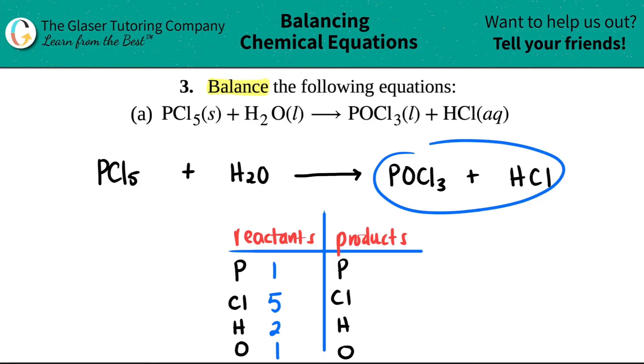I do the same thing for the product side, just make sure you're going in order. I have one phosphorus here. Now we move to chlorine. I have a Cl here and a Cl over here. I have three chlorines in POCl₃ and one in HCl. Three plus one gets me a total of four.